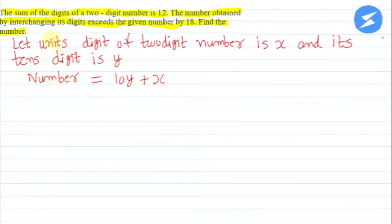Now looking at the first condition: the sum of the digits of the two-digit number is 12, which means x plus y equals 12.